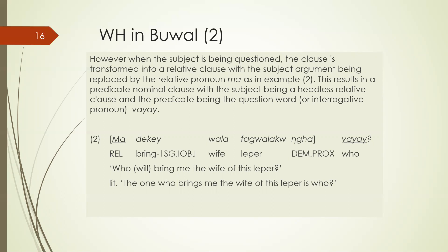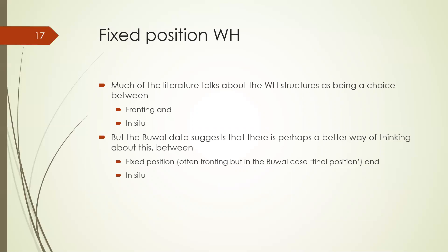We've now seen a pattern: in Bual, WH words start with V; in Mashang Tangsa, they often start with M; in Bulgarian and Serbo-Croatian, they start with K; and in Chinese they start with SH. We could call this 'fixed position WH' — either at the front or at the end. Although most of the literature describes WH structures as a choice between fronting and in situ, this data suggests a better framework: fixed position — either front or end — versus leaving the word in its normal place. That brings me to the end of the lecture.